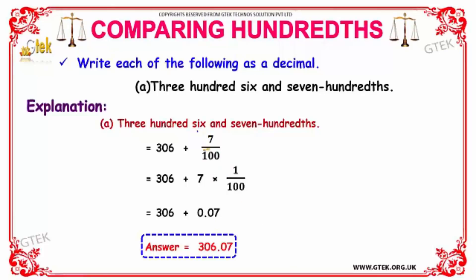As discussed, when the fractional term has 100 as the denominator, we can simply write it as 0.07. So the final answer is 306.07.